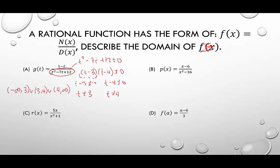We can preemptively decide whether there are vertical asymptotes or holes at 3 and 4. The only factor in the numerator is 1 minus t, which is not going to simplify with either t minus 3 or t minus 4. So we know there will be vertical asymptotes at t equals 3 and t equals 4. But really, the problem just asks us for the domain.